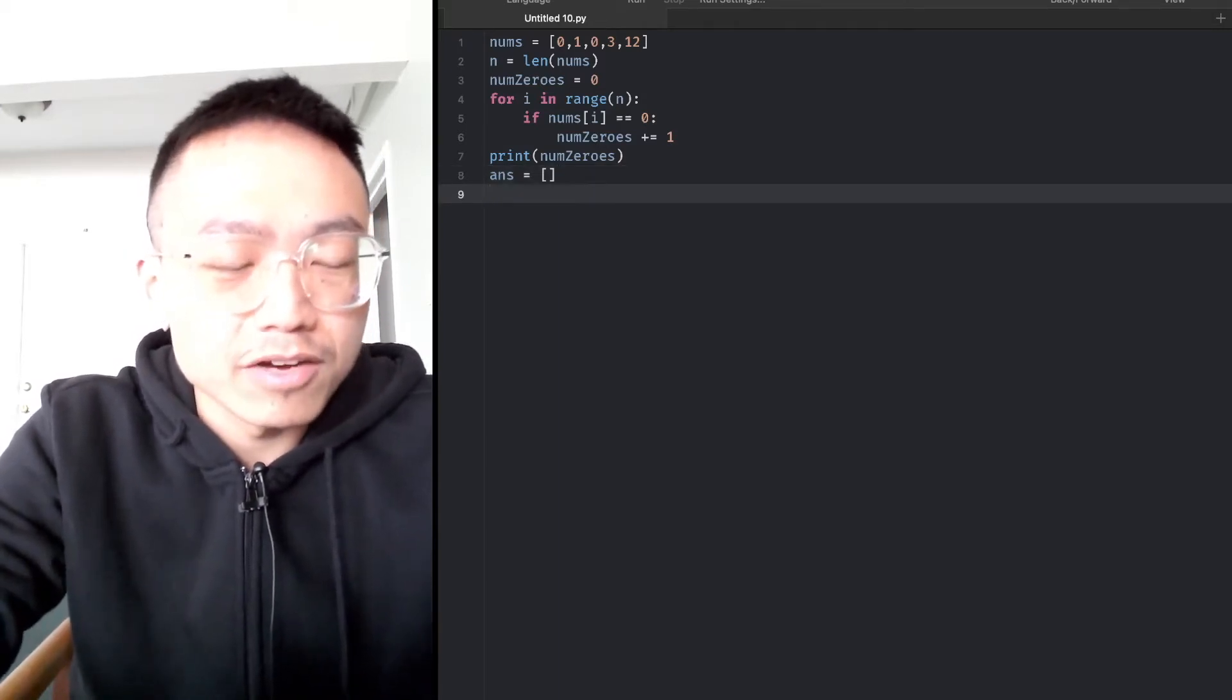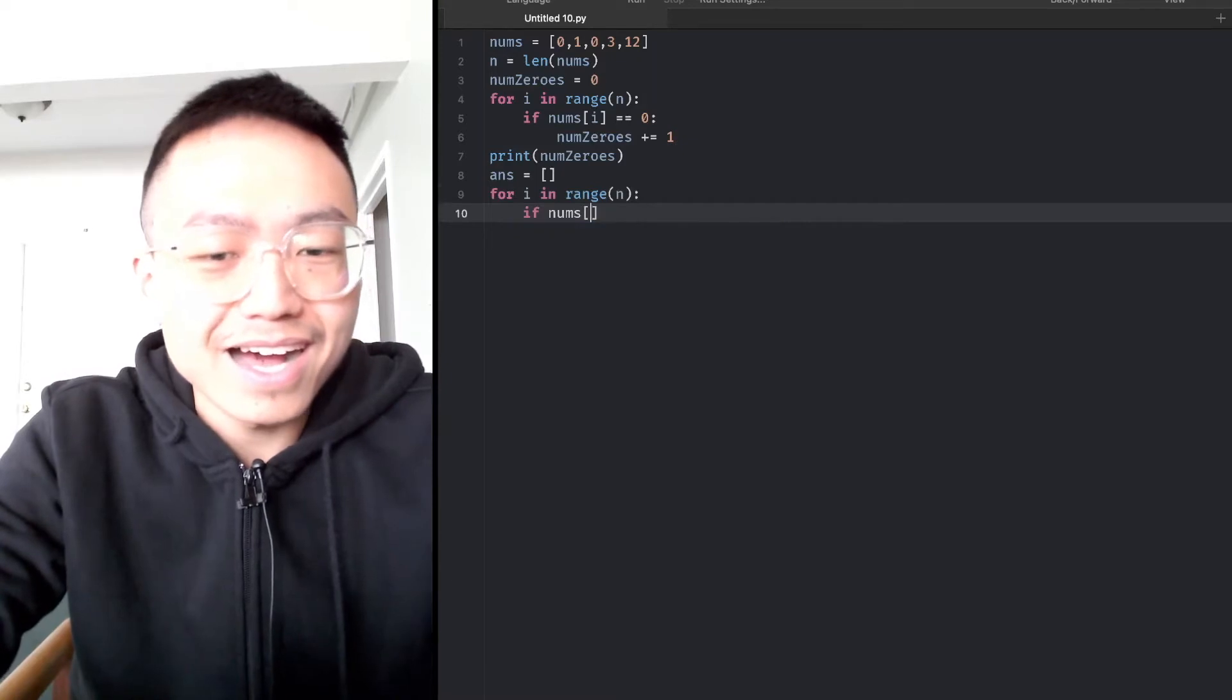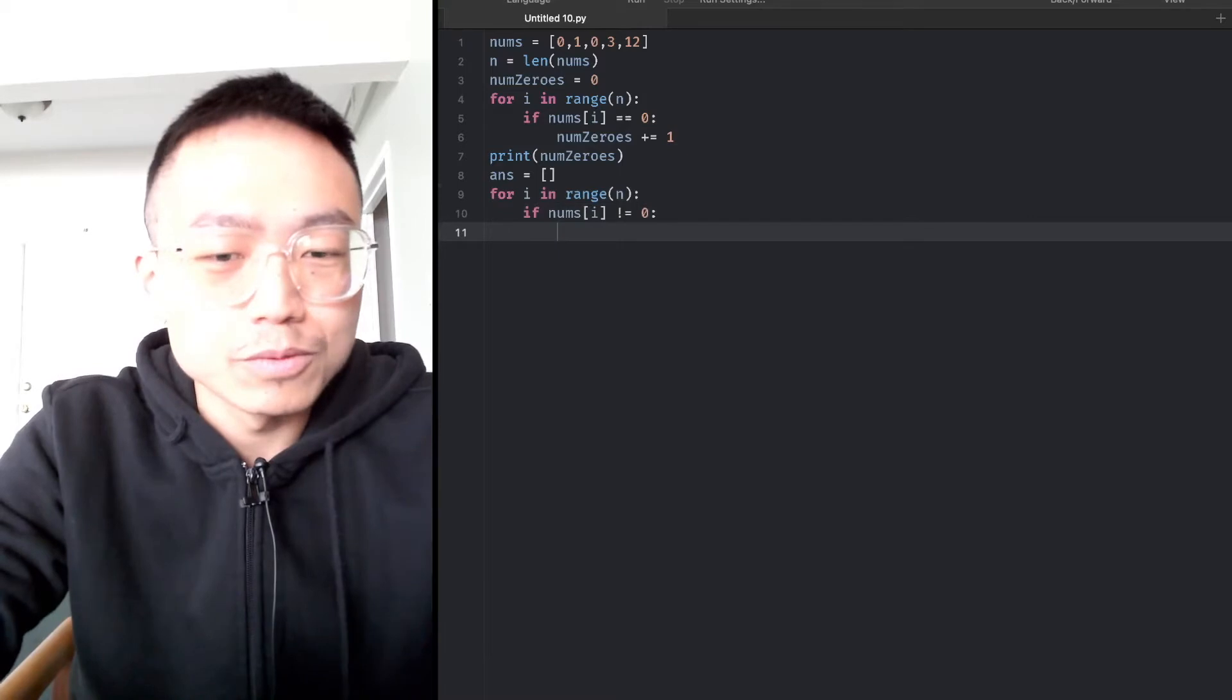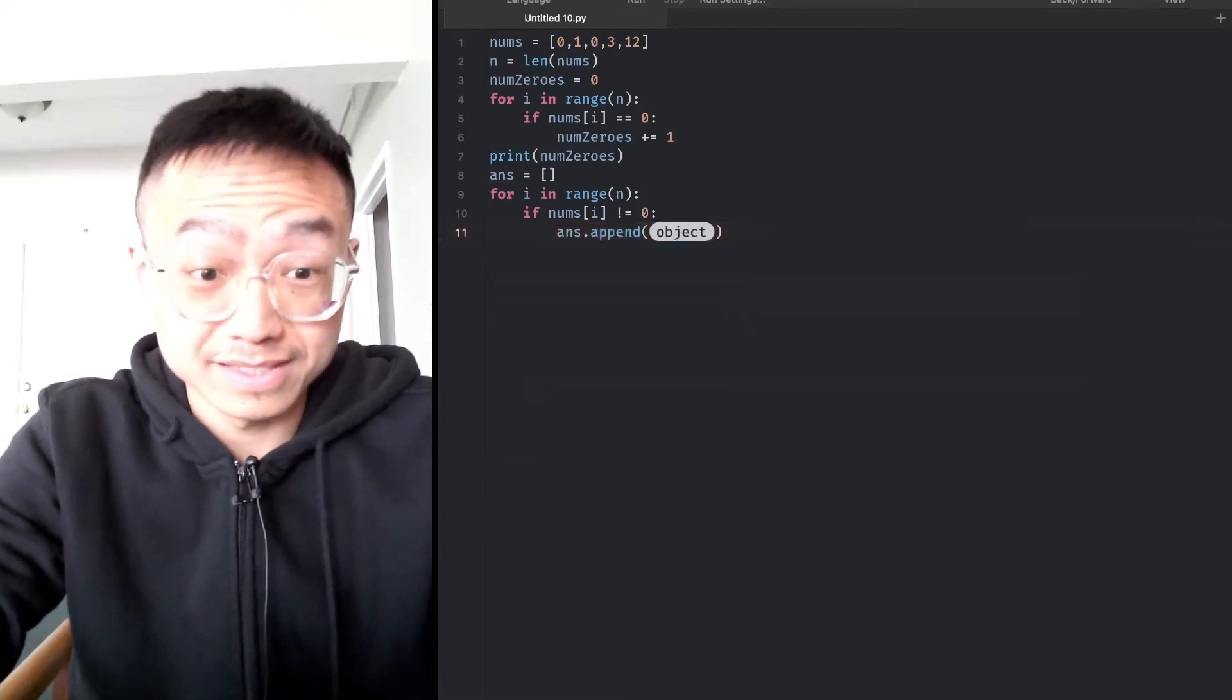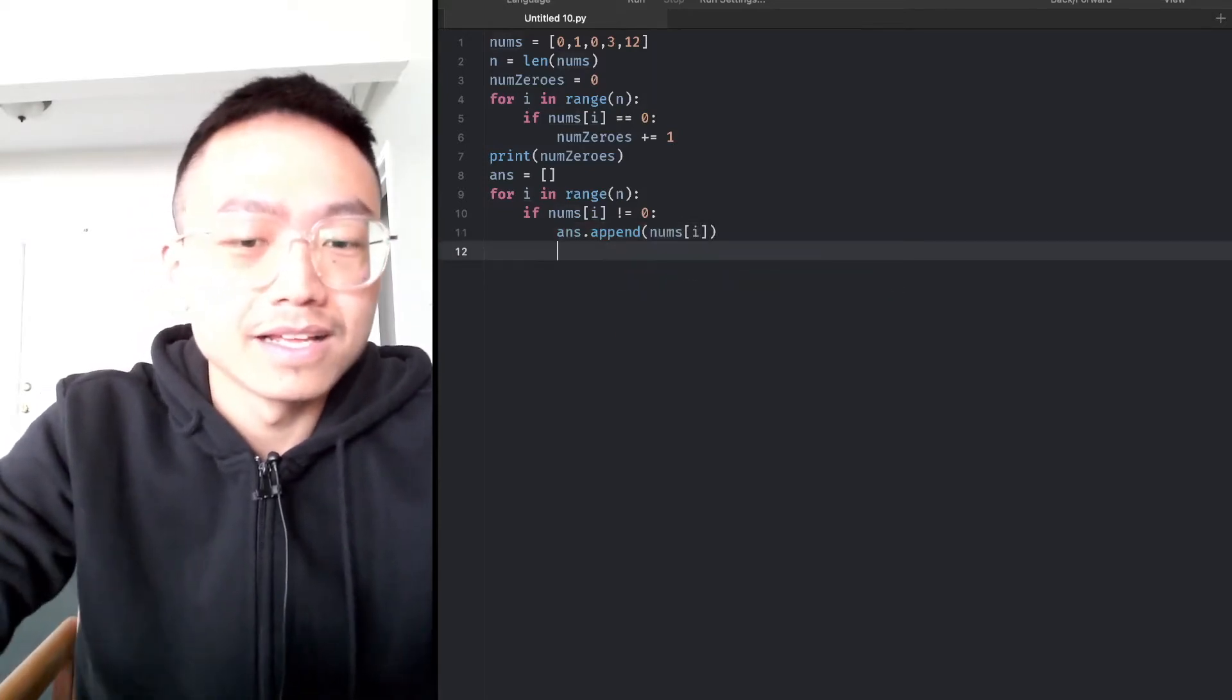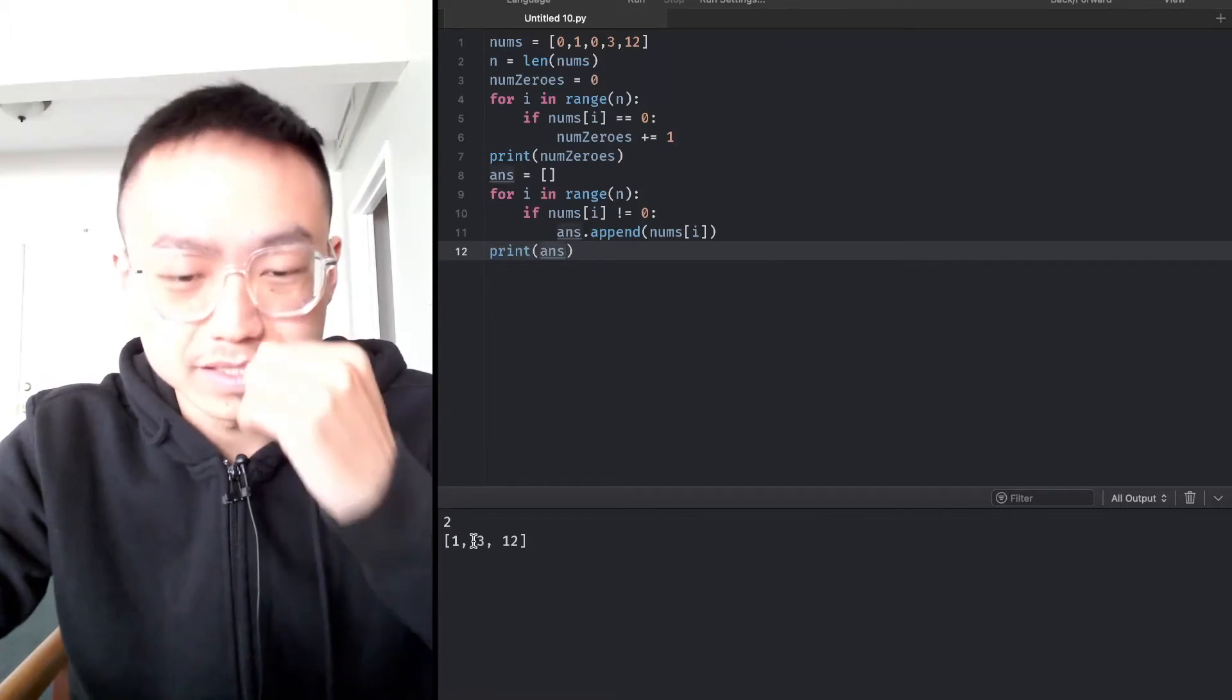We set a for loop for i in range n. If nums at i isn't zero, then we just append them from the start to the left. We can make a test and print them. Yeah, we did it. We add the numbers in front.